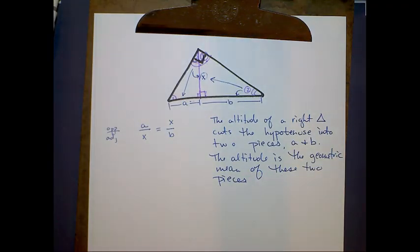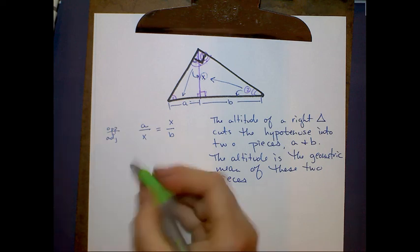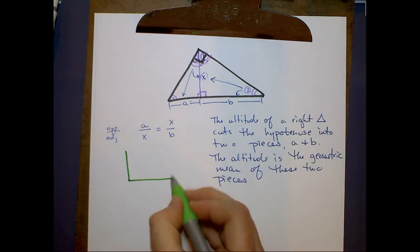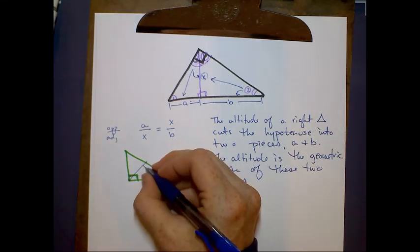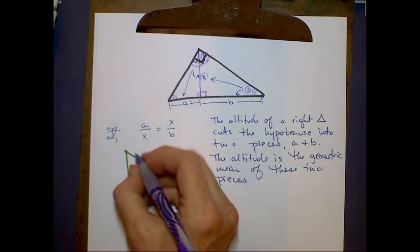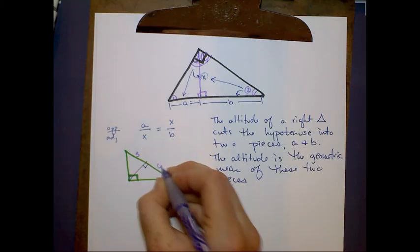In other words, if I had a right triangle and I wanted to find the altitude and I knew that this was three and this was six,